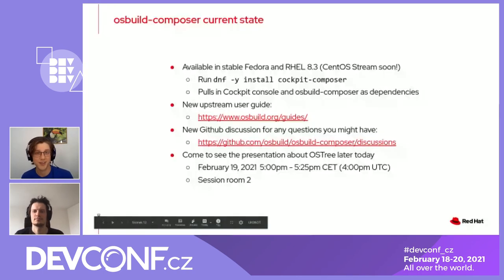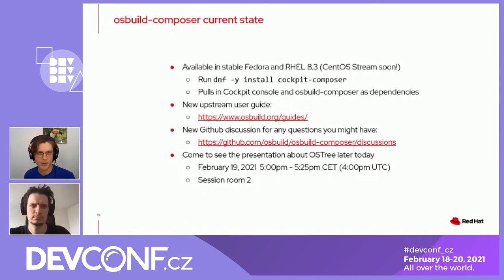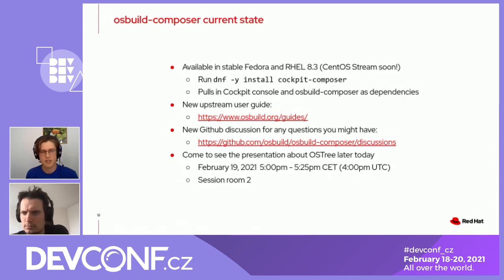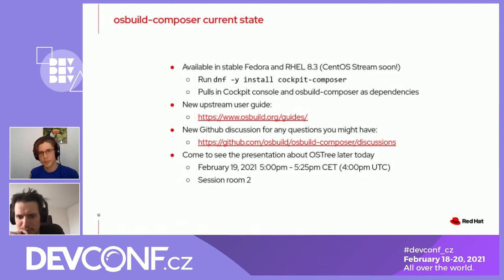What's the current state of OS Build Composer? It's already available in stable Fedora, so you can install it right now. It's also available in RHEL 8.3, so you can build your own RHEL images and upload them to clouds. We've just merged support for building CentOS Stream images, so if you want CentOS Stream in AWS, you can use Image Builder to build them. To try it right now, just type: dnf install cockpit-composer, and it will pull all the dependencies like OS Build Composer and OS Build.